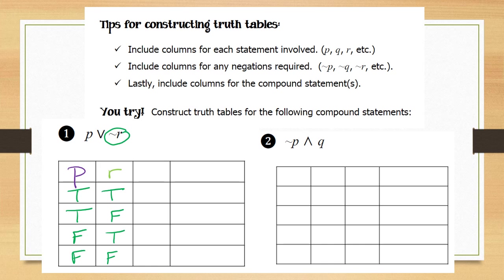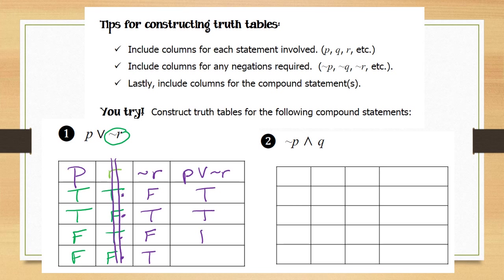Since the statement says 'not r,' we add a column and take the opposite of r: the opposite of true is false, the opposite of false is true, opposite of true is false, opposite of false is true. Now for the final column p or not r — we don't need the original r column anymore. True or false gives true; true or true gives true; false or false gives false; false or true gives true.